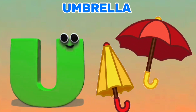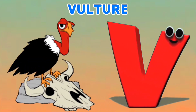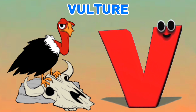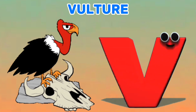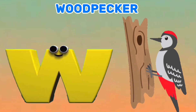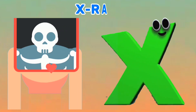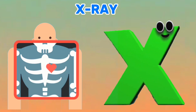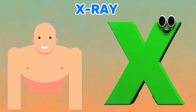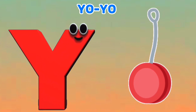U is for Umbrella. V is for Vulture. W, W. W is for Woodpecker. W, W. X is for X-Ray. X, X.